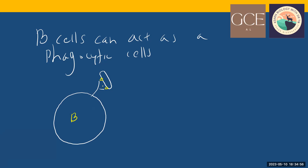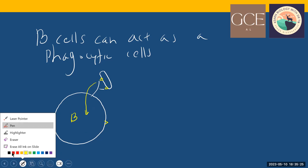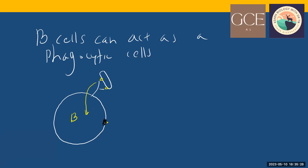They need to internalize the whole structure. After internalizing the whole bacteria, the lysosome secretes enzymes and digests the structure of the bacteria. Then it collects the antigens, and this antigen can be displayed on the surface of the B-cell together with the MHC protein.